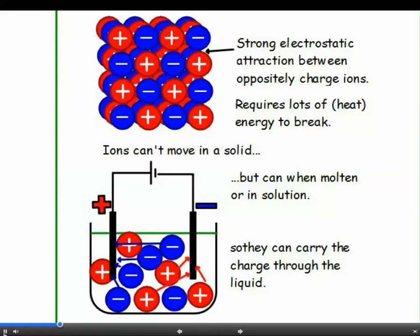As you know, ionic compounds contain charged particles called ions. If the ions are free to move, they can carry a charge and conduct electricity. In solids, the ions are held in fixed positions, which explains why solid compounds are not conductors of electricity. But when these ionic compounds are melted or dissolved in water, the ions are free to move, so they can carry a charge and conduct electricity.